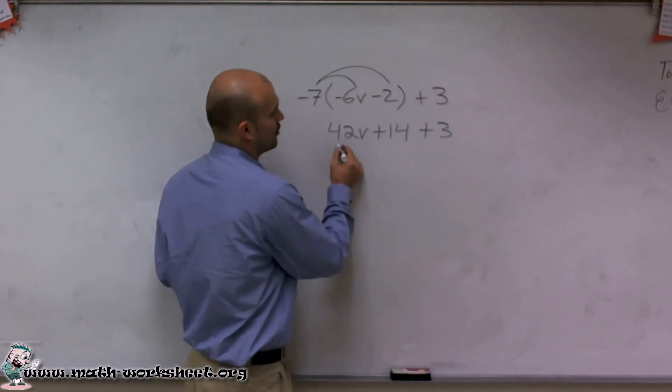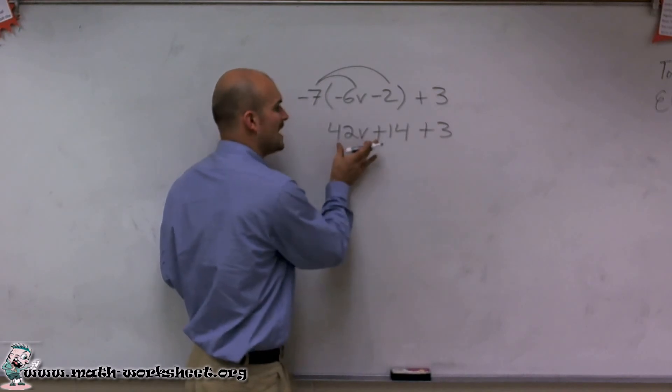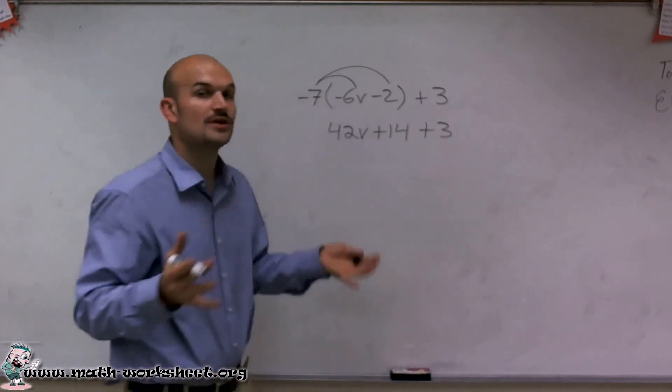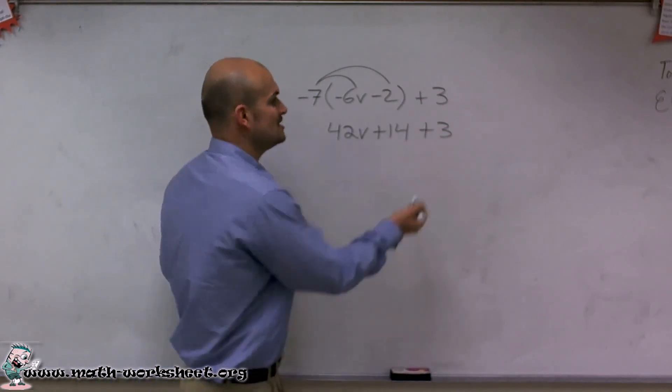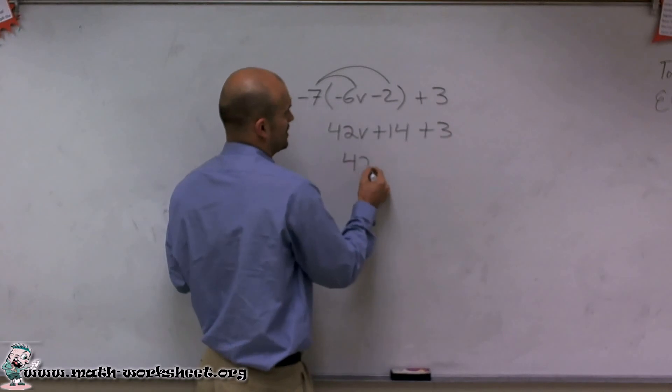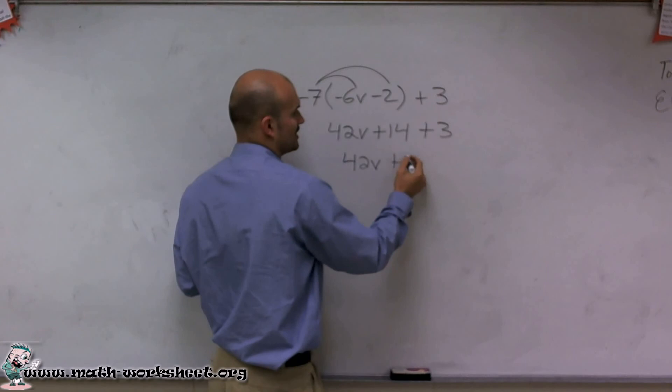So I look at this, and this is the only number that has a variable with it. I can only add this term to any other number that has a variable, but these other two terms are just numbers. So since these are just numbers, I can combine them. 42v plus 14 plus 3 is 17.